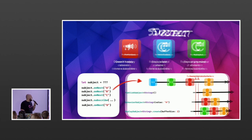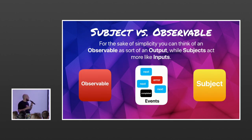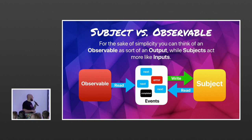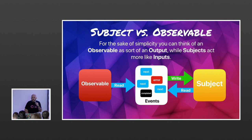Subjects and observables can be thought of as inputs and outputs. Observables are read-only, so you subscribe from them. Subjects, since you can also write values into them, are used as inputs in many situations — such as view models. Observables serve as that read-only unit you subscribe from.